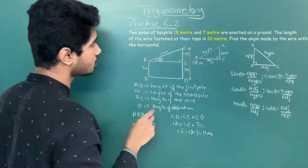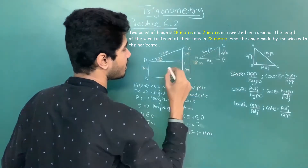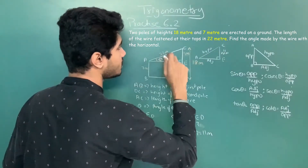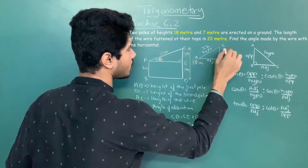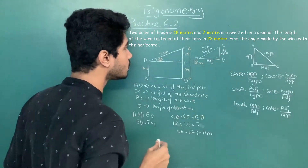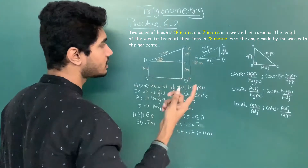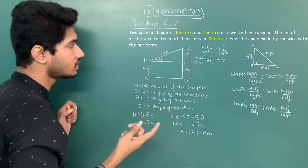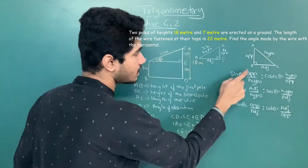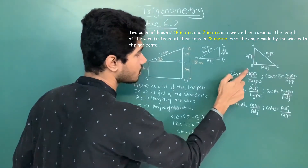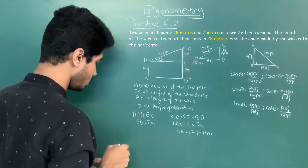We have CE given as 11 and AC given as 22. We know opposite and hypotenuse, so we take the function that uses opposite and hypotenuse together — that is sine theta. Sine theta equals opposite upon hypotenuse.